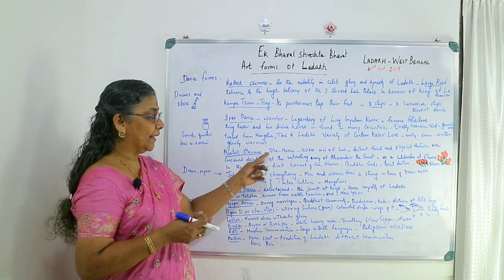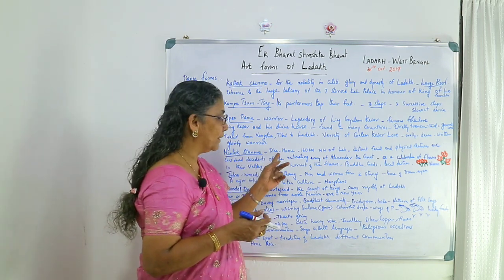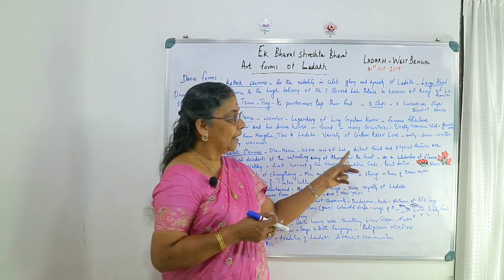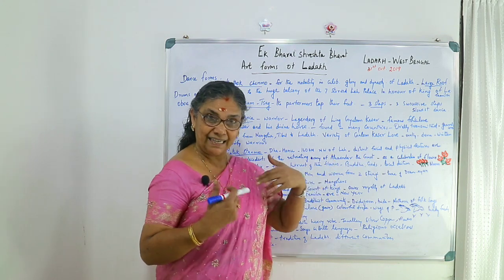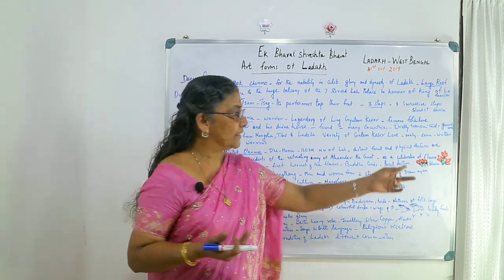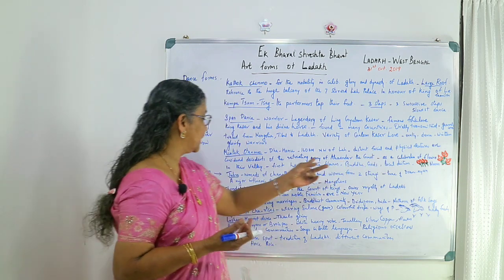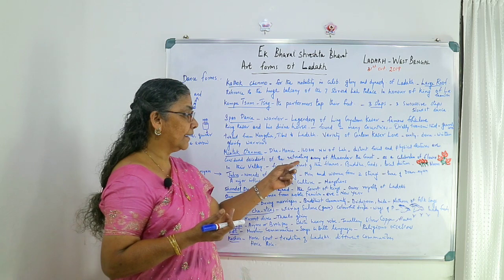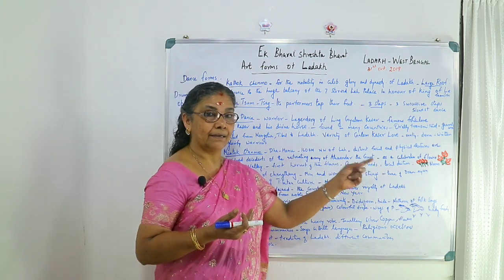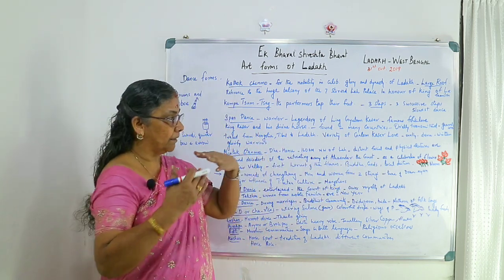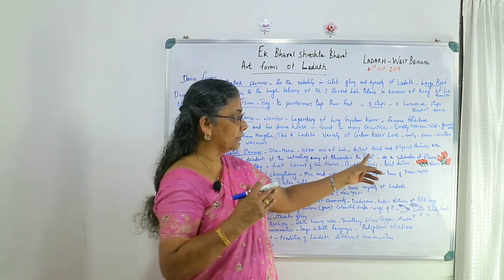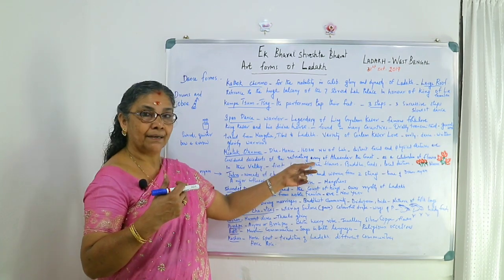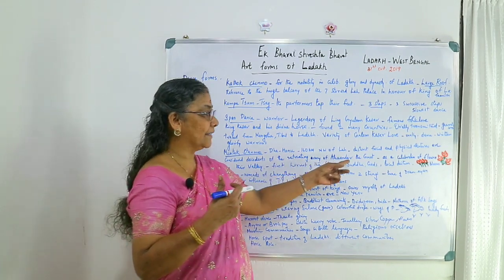Mendogstanmo is performed in Dahanu, a place about 160 kilometers northwest of Leh. The people there have distinct facial and physical features, and they are considered descendants of the retreating army of Alexander the Great.